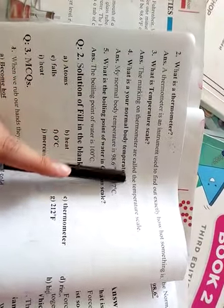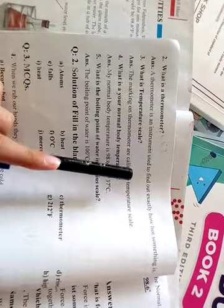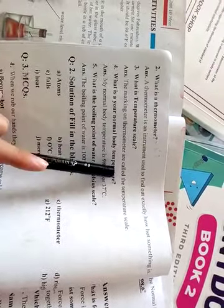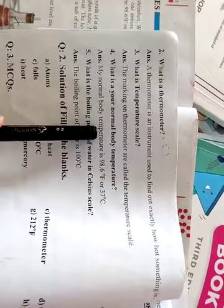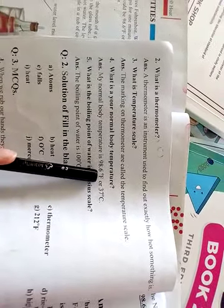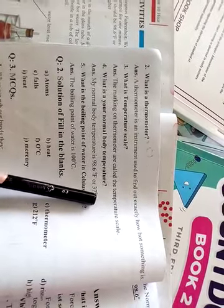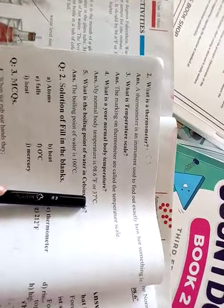Next question: What is the temperature scale? The markings on a thermometer form the temperature scale. Question: What is your normal body temperature? My normal body temperature is 98.6 degrees Fahrenheit or 37 degrees Celsius.